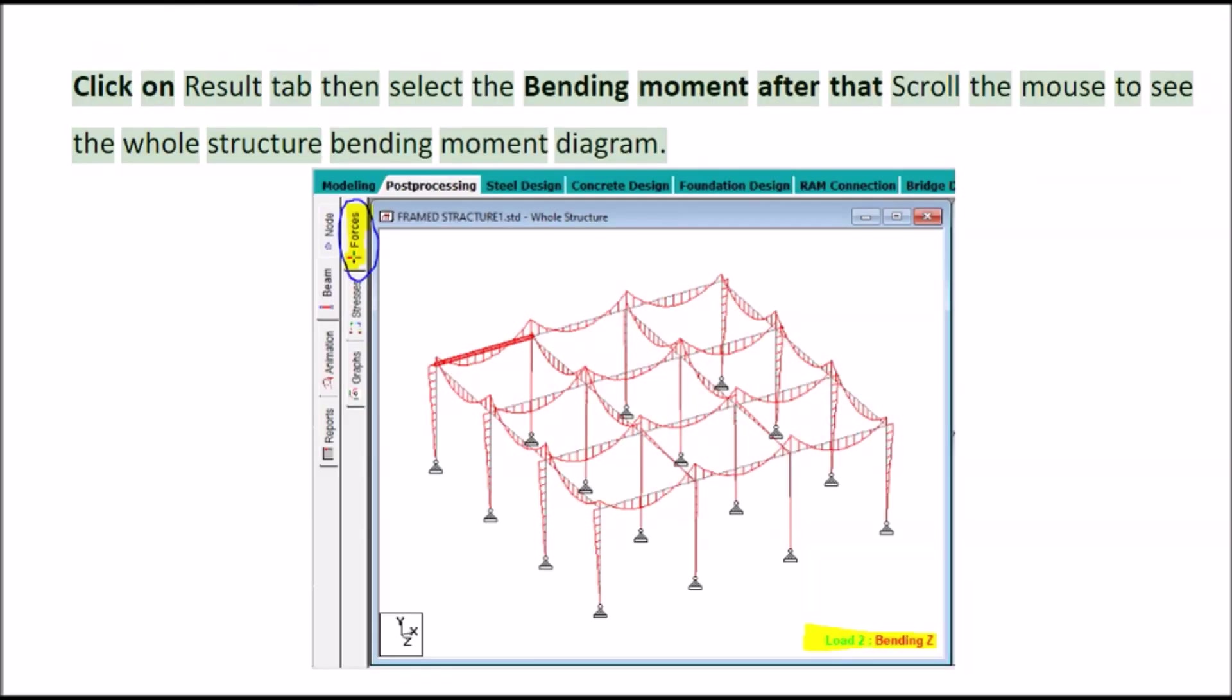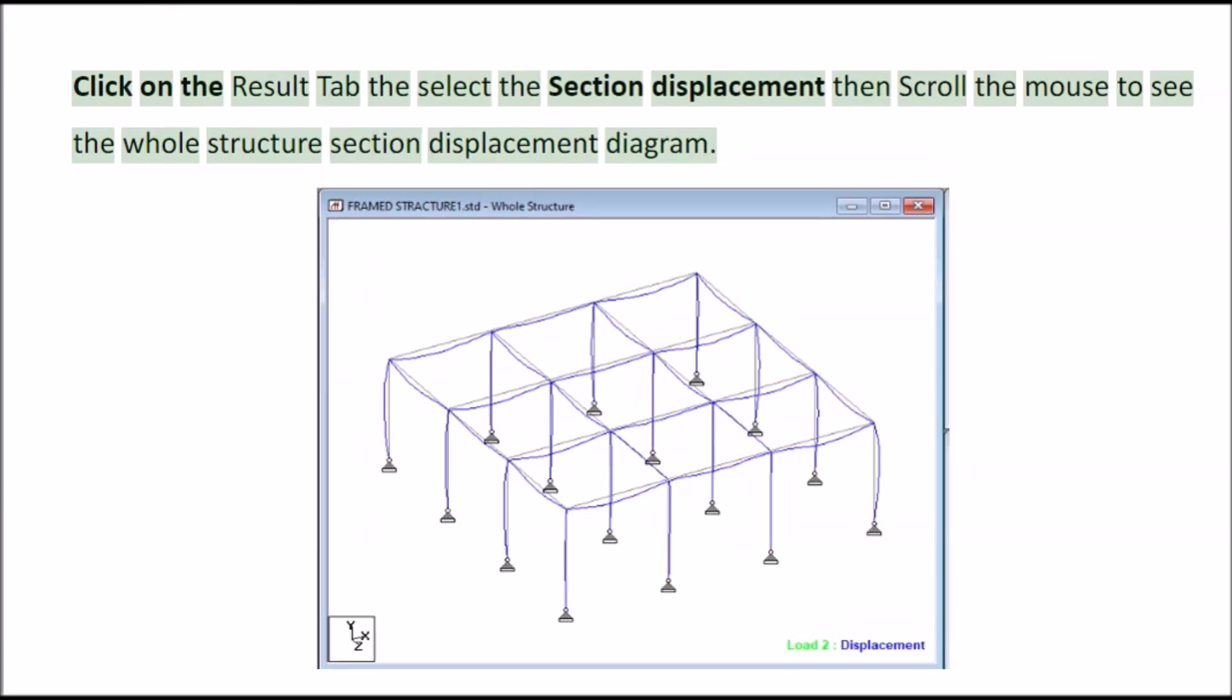Click on result tab then select the bending moment after that scroll the mouse to see the whole structure bending moment diagram click on the result tab then select the section displacement then scroll the mouse to see the whole structure section displacement diagram.